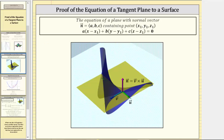Looking at the graph below, the blue surface is given by a function f of x, y. The yellow plane is tangent to the surface at this point here. Notice how vector u and vector v are two vectors in the tangent plane, which means if we determine the cross product of these two vectors, this will give us a normal vector to the plane. Then we can use the normal vector and the point of tangency to determine the equation of the tangent plane.